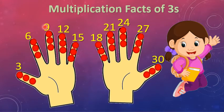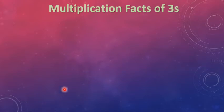3, 6, 9, 12, 15, 18, 21, 24, 27, and 30. Now let's go to learn another strategy to find multiplication facts of 3.